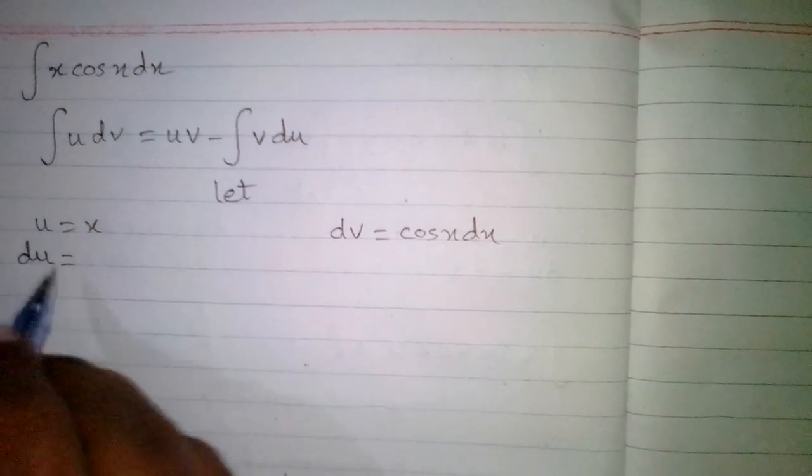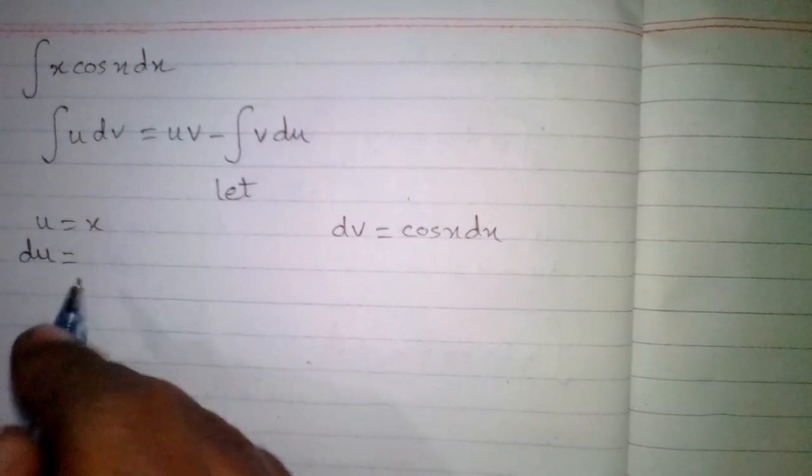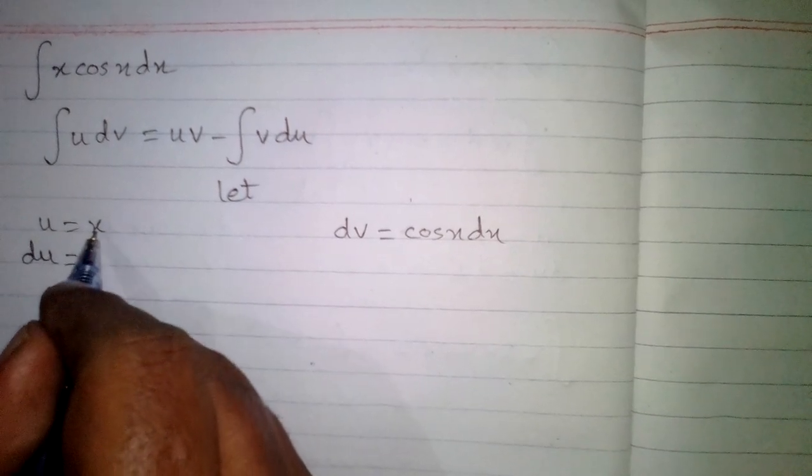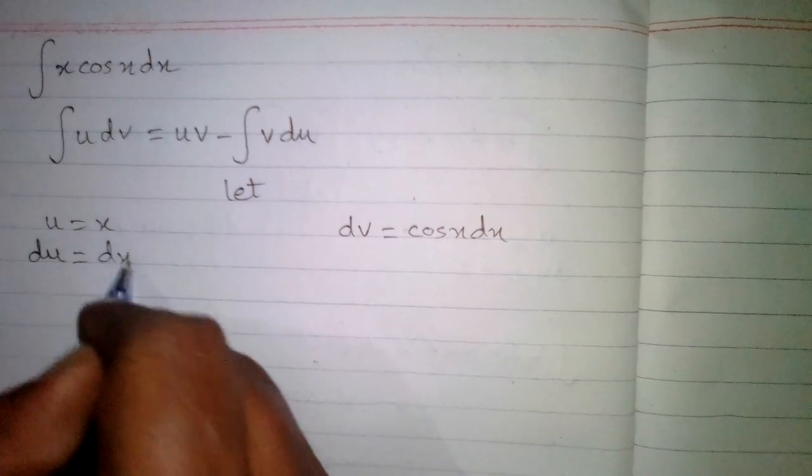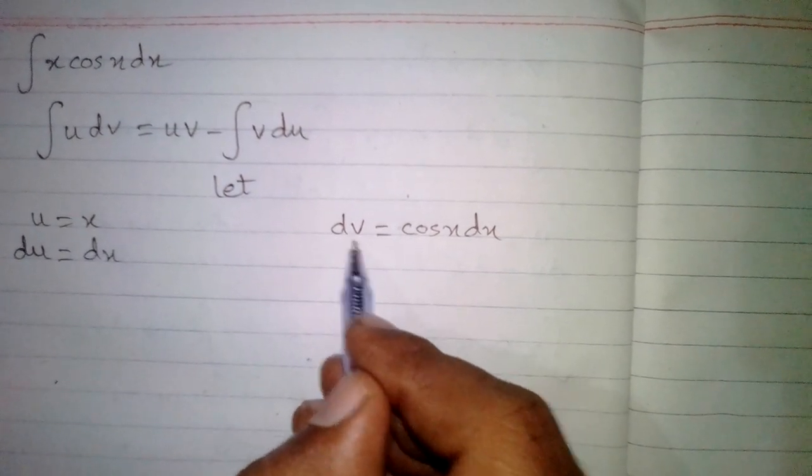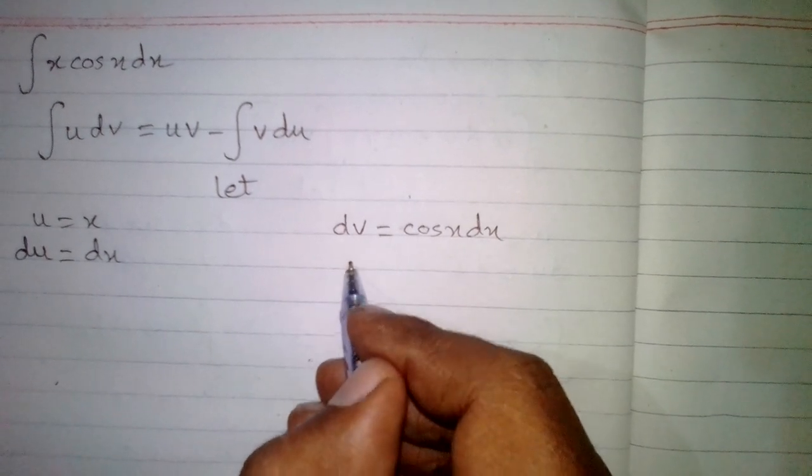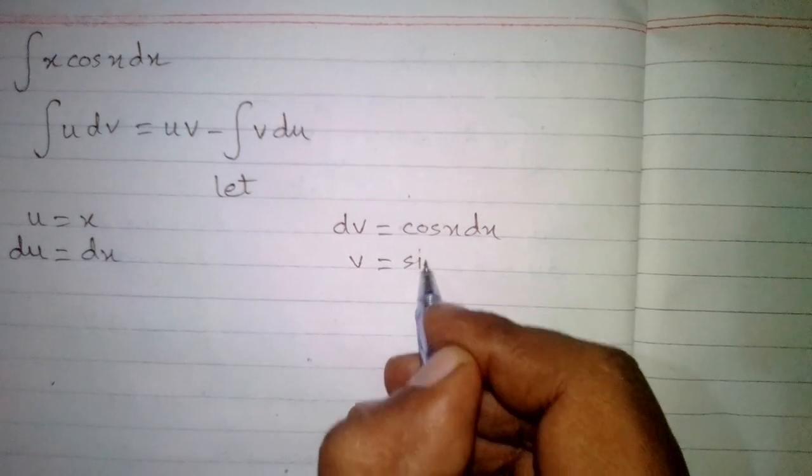Now we have to find the differential du. The differential du is equal to the derivative of x times dx. The derivative of x is 1, so 1 times dx is dx. Then we have to find the integral of this expression. The integral of dv is v and the integral of cos x is sin x.